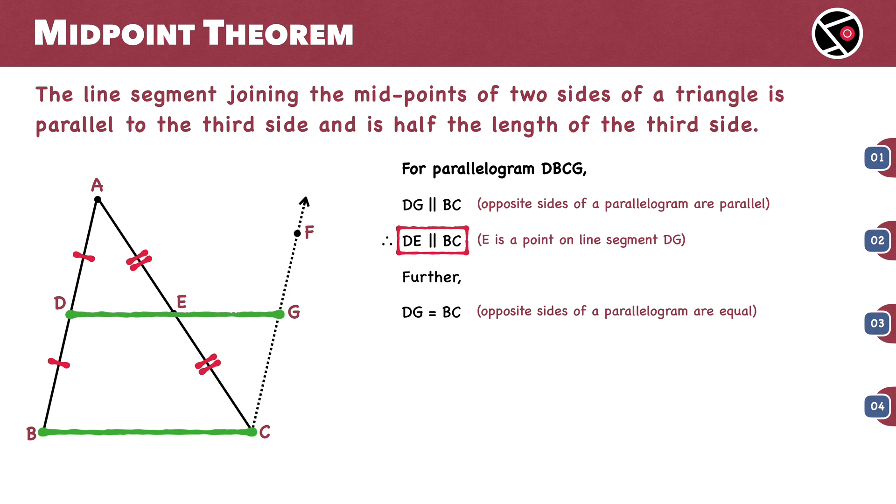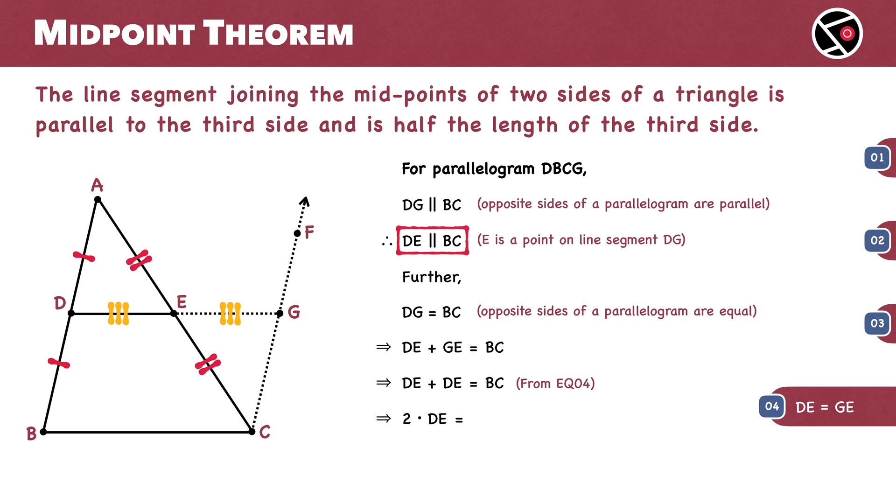This gives us DE plus GE equals BC. From equation 4, DE equals GE. We substitute GE with DE to get 2 times DE equals BC, or DE is one half the length of BC.